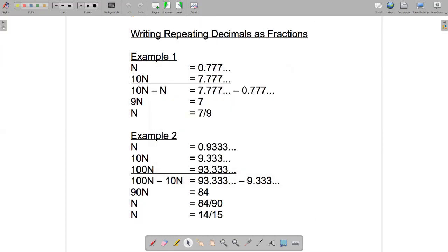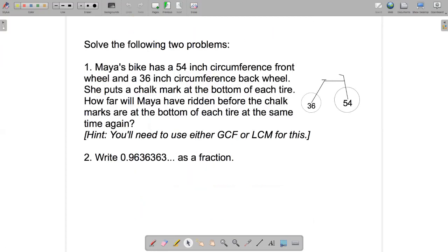So that's how to write repeating decimals as fractions. So two questions to answer. First one relates to either greatest common factor or least common multiple. It's up to you to figure out which of the two concepts applies here.